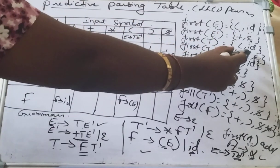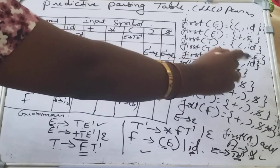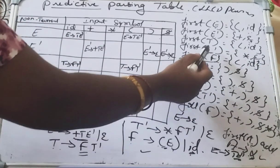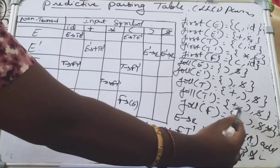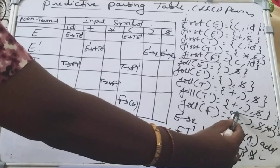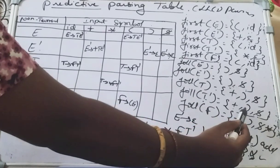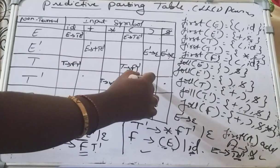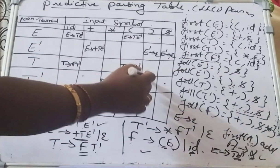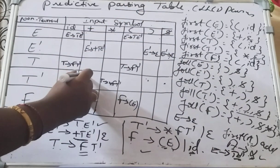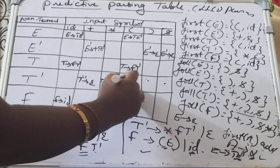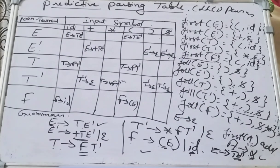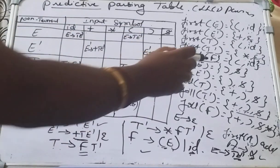Similarly, FIRST(T') contains epsilon, so find FOLLOW(T') = {plus, close parenthesis, dollar}. In the T' row under the plus, close parenthesis, and dollar columns, add the production T' derives epsilon.